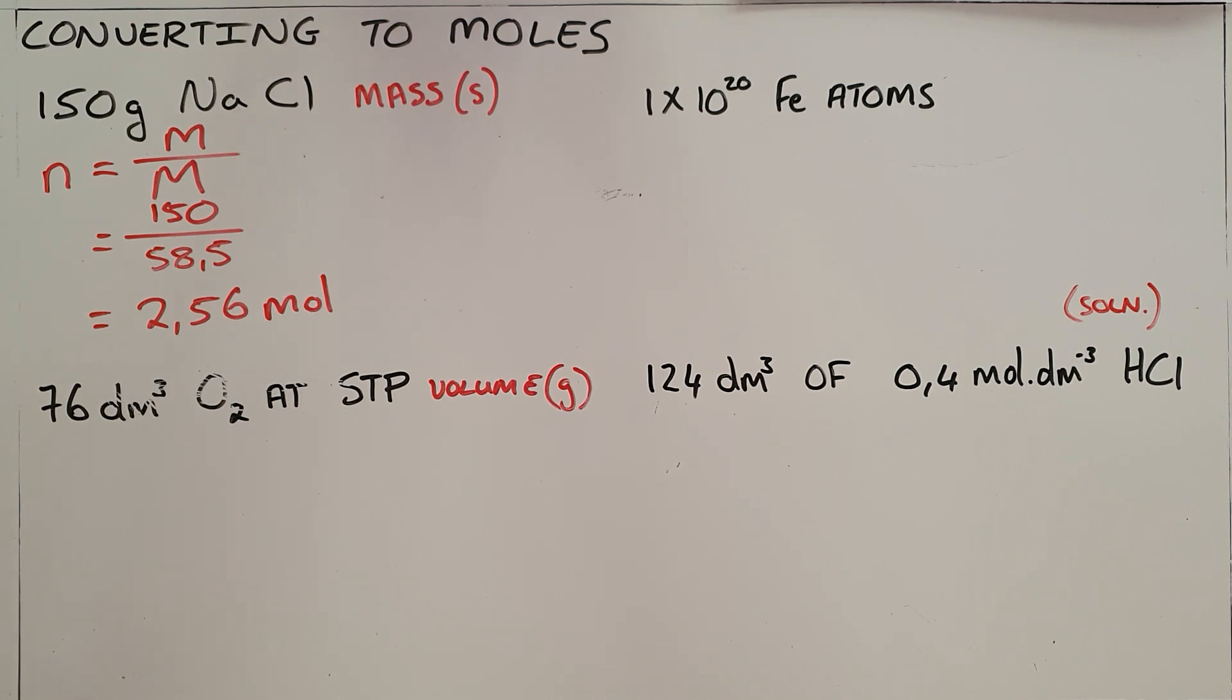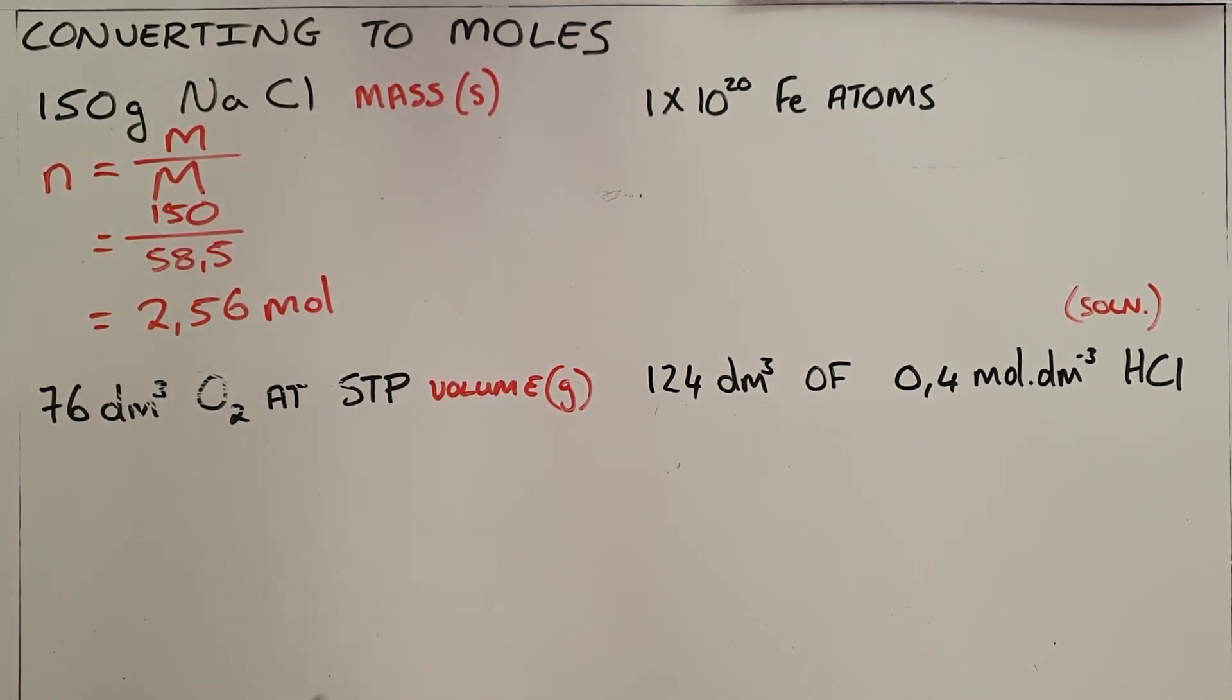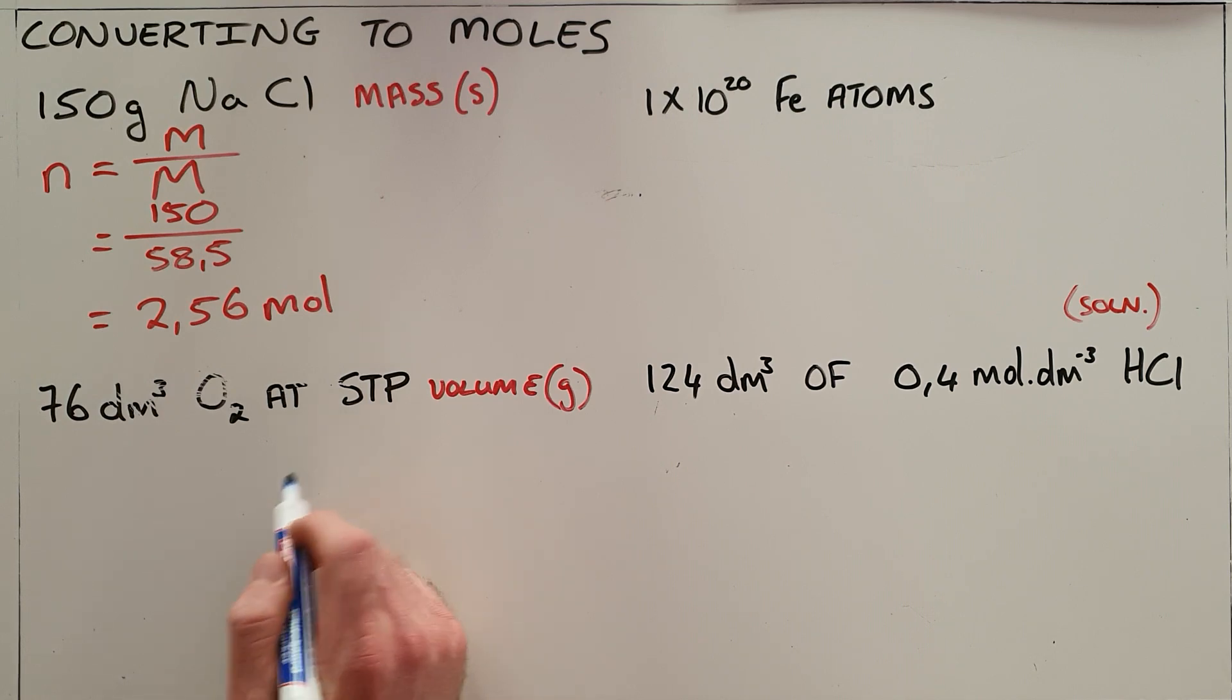The second way you can be given an amount of substance is as a volume at STP. STP refers to standard temperature and pressure, and it basically says that at standard temperature and pressure, one mole of any gas occupies the same volume, and that volume is 22.4 cubic decimeters.